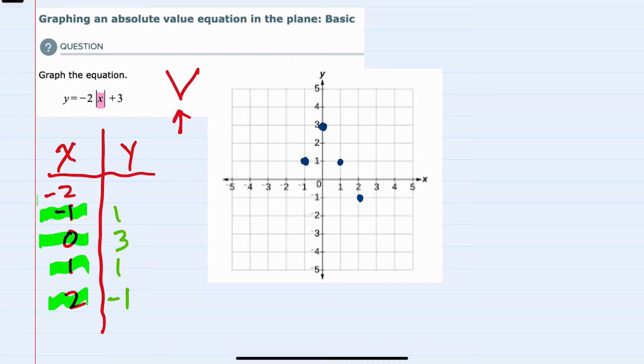Lastly we'll plug in negative 2. This gives us y equals negative 2 times the absolute value of negative 2 plus 3. The absolute value of negative 2 is 2, so when we do the multiplication, negative 2 times 2 is negative 4 plus 3. Again we have y equals negative 1, so our point is (-2, -1).